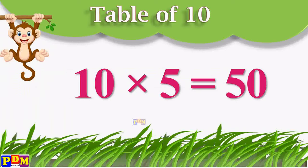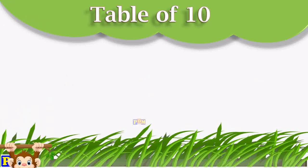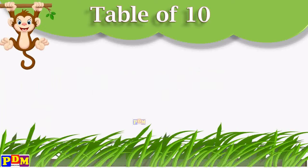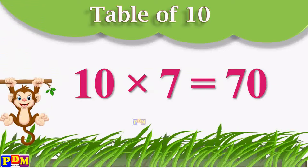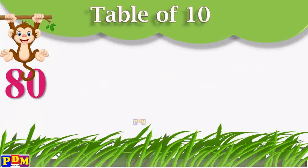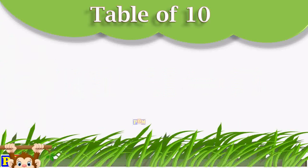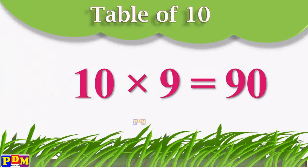10 fives are 50. 10 sixes are 60. 10 sevens are 70. 10 eights are 80. 10 nines are 90.